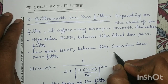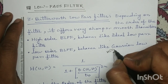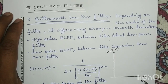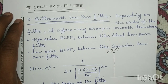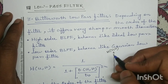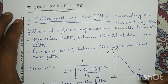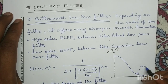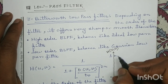If we plot the transfer function with H(u,v) on the y-axis and D(u,v) on the x-axis, for a low-order Butterworth low pass filter — for example, order N=1 — it offers a very smooth transition, behaving like a Gaussian low pass filter. For a high-order Butterworth low pass filter, it approaches the sharp cutoff characteristic of the ideal low pass filter.